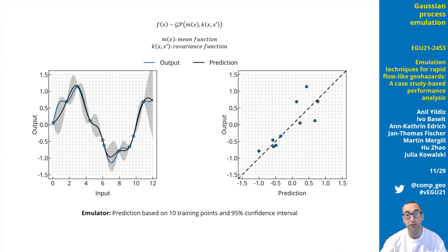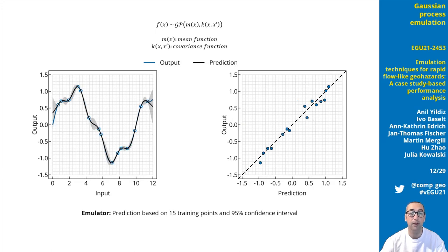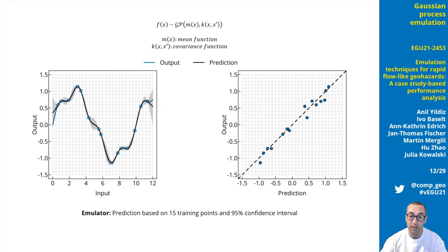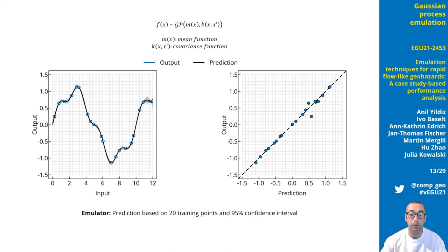The gray shaded area shows the 95% confidence interval. The figure on the right is a one-to-one plot of the output and the prediction. We can build a new emulator using 15 training points, and we see that the confidence interval becomes narrower around the estimated output functions, and the predicted function and the original output function come really close together. Increasing the number of training points improves the estimation quality further.